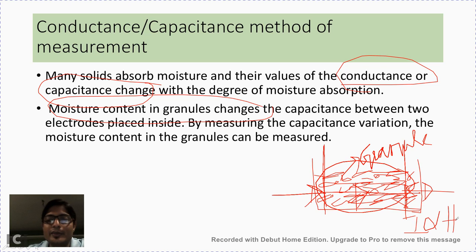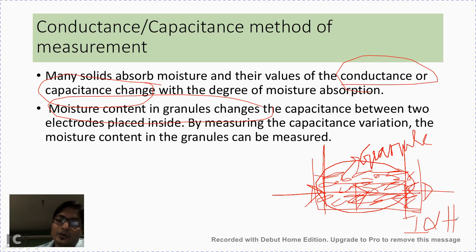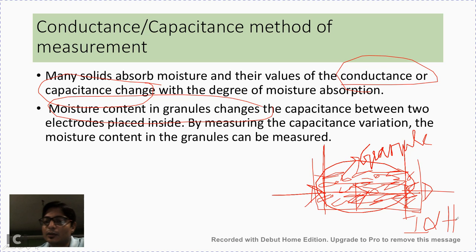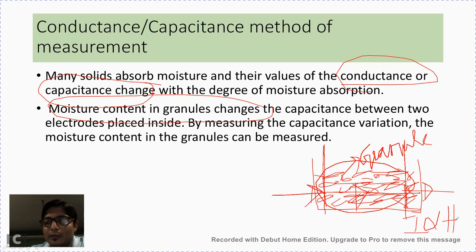We can then take measures to control the humidity — for example, turning on the AC makes the air dry, while a cooler makes the air more humid. Depending on our requirement, we can adjust the humidity level using different equipment.